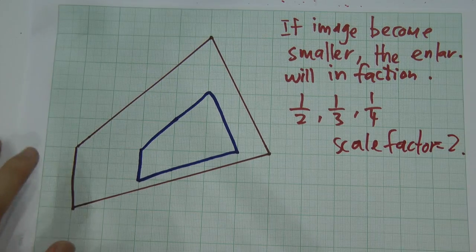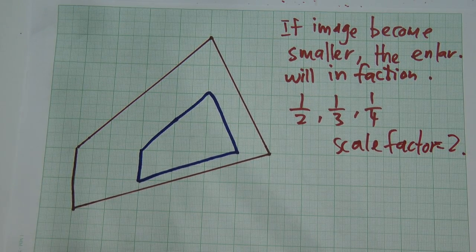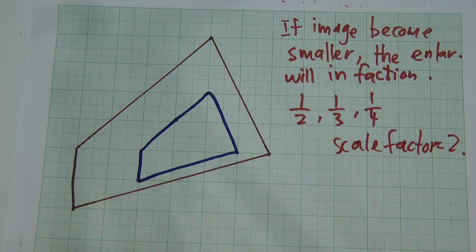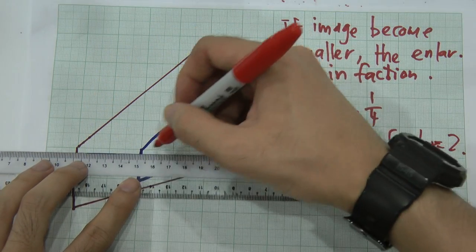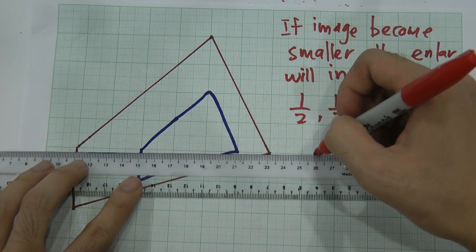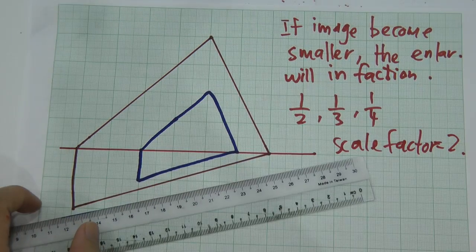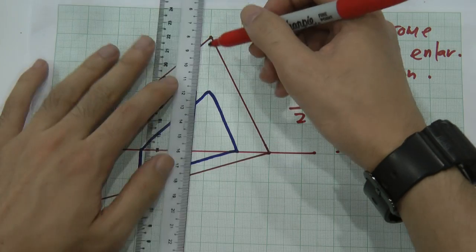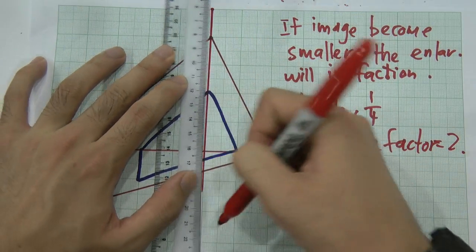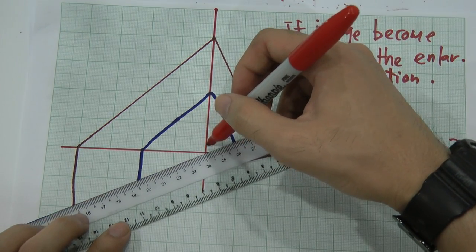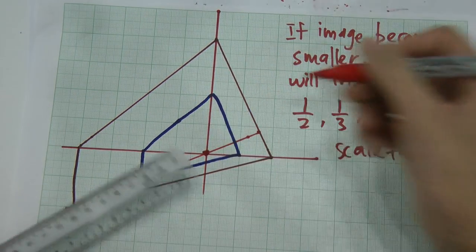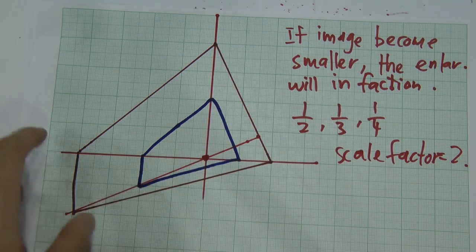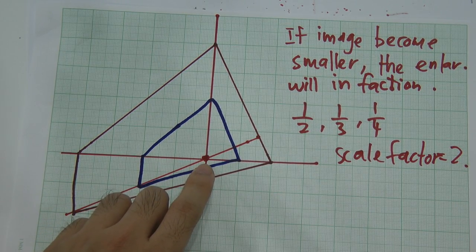Once you know the scale factor is two, we find the center point. Connect corresponding coordinates: this coordinate to this coordinate, and this coordinate to this coordinate — they are on the same straight line. Then connect the next pair, and the next. All lines pass through one common point, which is the center point.